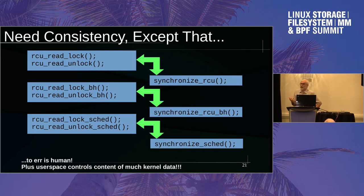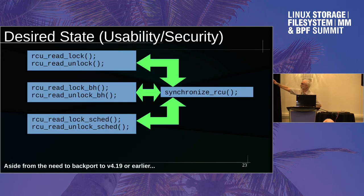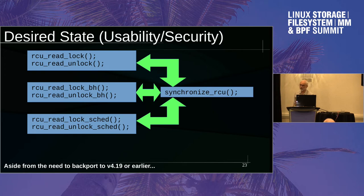Somebody figured out a way to exploit this. So Linus, to his credit, said, can we do something about this? The fix is to make synchronize_rcu wait for all flavors of readers — any of them. That way you can just use synchronize_rcu no matter which type of reader you're using, and it'll just work. The 'just work' part took about a year of my life, but it's there now, and that's good.